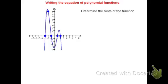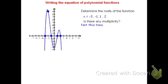The x-intercepts negative 3, 0; negative 1, 0; 1, 0; and 2, 0 tell me my roots are going to be x equals negative 3, x equals negative 1, x equals 1, and x equals 2. On these, I'm going to look for multiplicity. At each of the points where they have an x-intercept, the curve passes right through, meaning there is no multiplicity. So none of the factors are going to have any exponents — they're all going to be single factors.